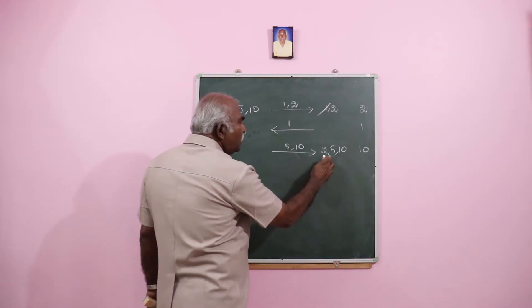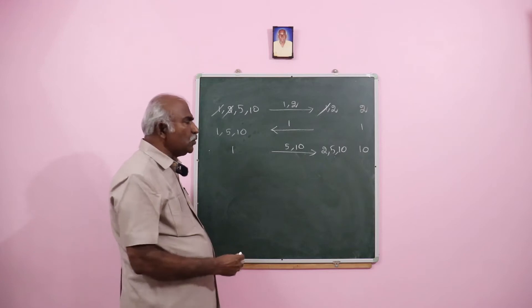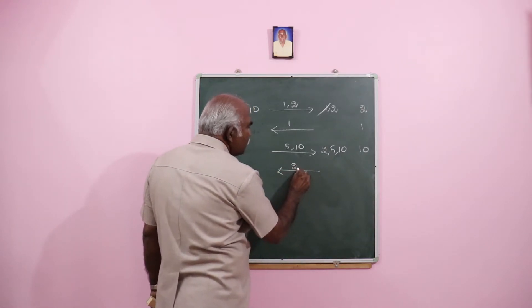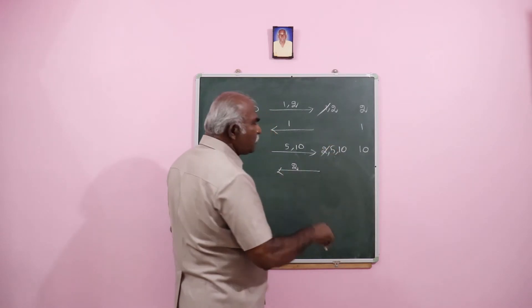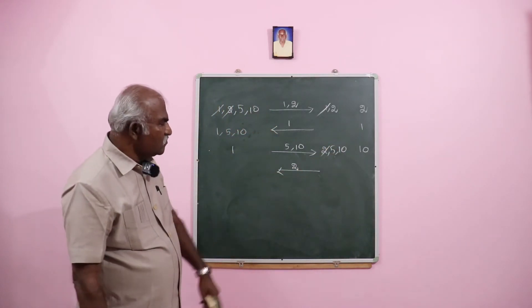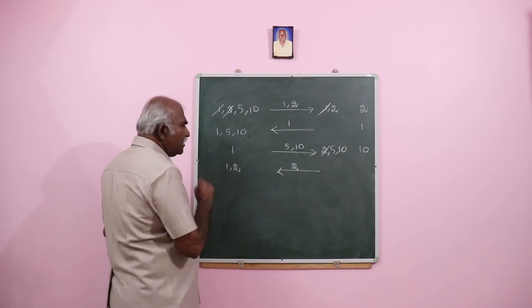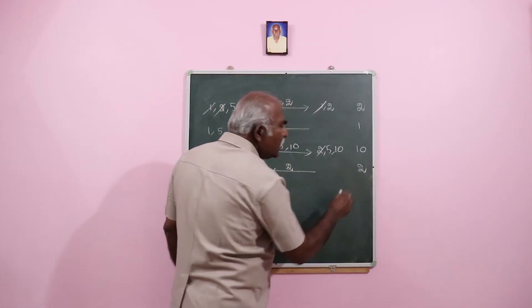Now who will take the least time? 2. So we send back 2. 2 is not here now. 5 and 10 are there. 2 comes here. 1 and 2 will be here. And the time taken is 2 minutes.